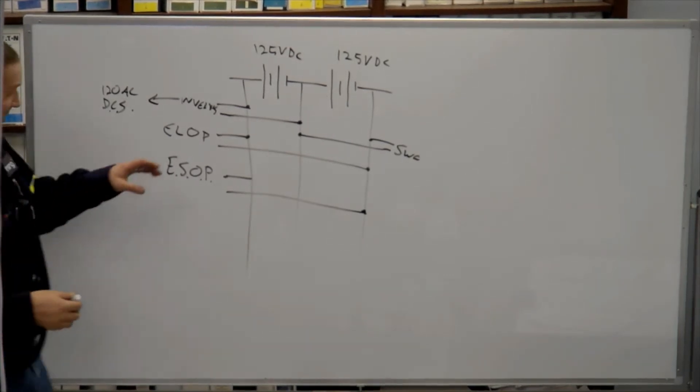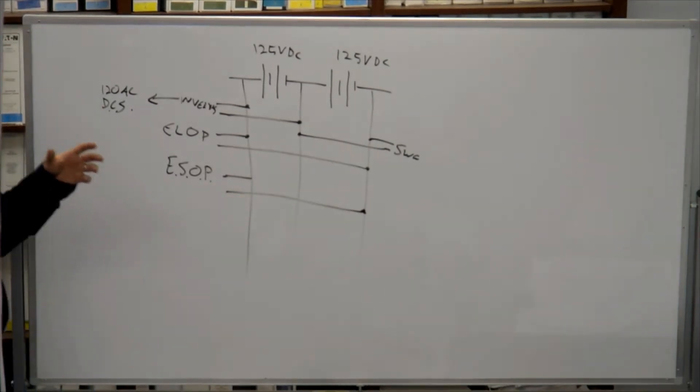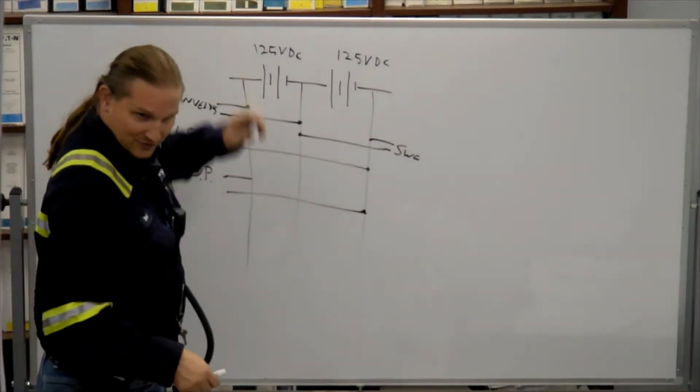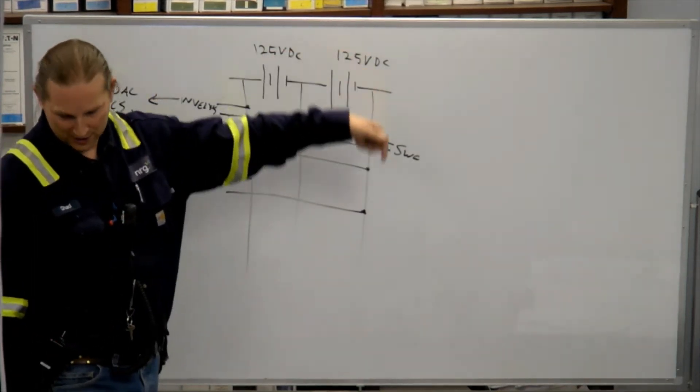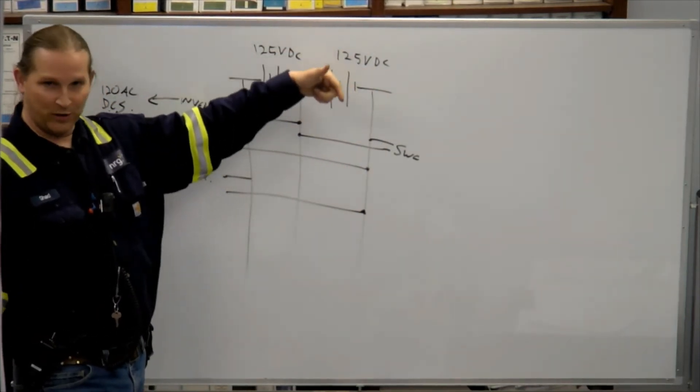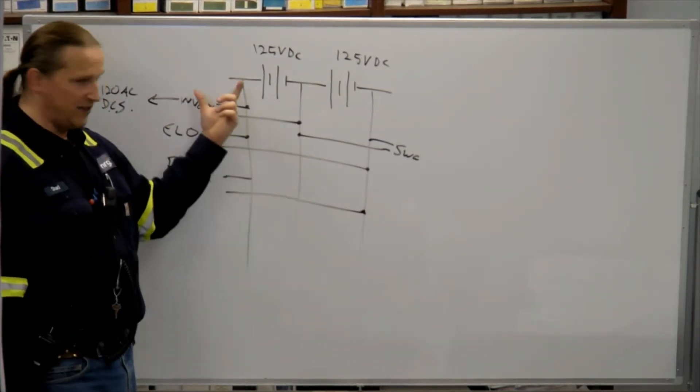There's like two or three other little panels that come off this, and oh, the exciter. Before the exciter is powered from the 23 kV power itself, it gets its initial spark off the DC bus.